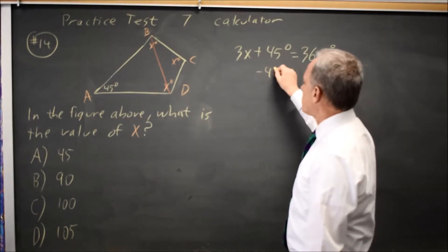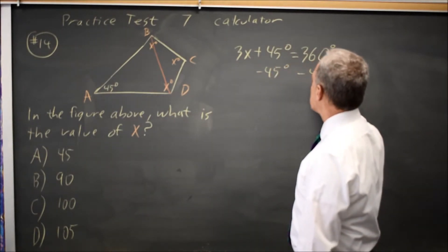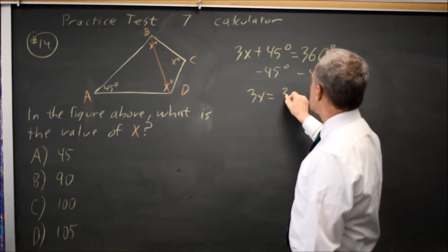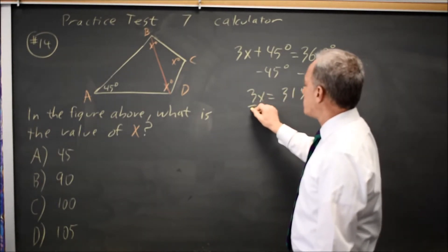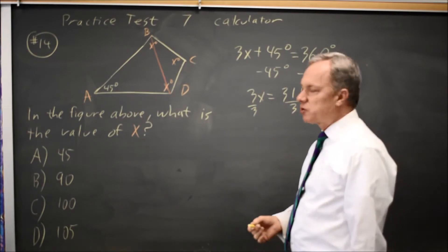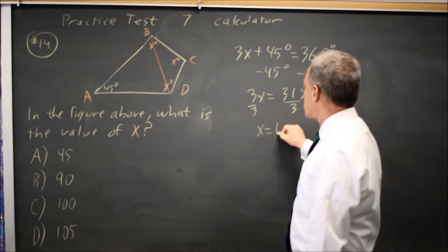Now that we know that, subtract 45 degrees from both sides. I'm going to drop the degree symbol. 3x equals 315. Divide both sides by 3. Notice I always do the same thing to both sides of the equation. x equals 105.